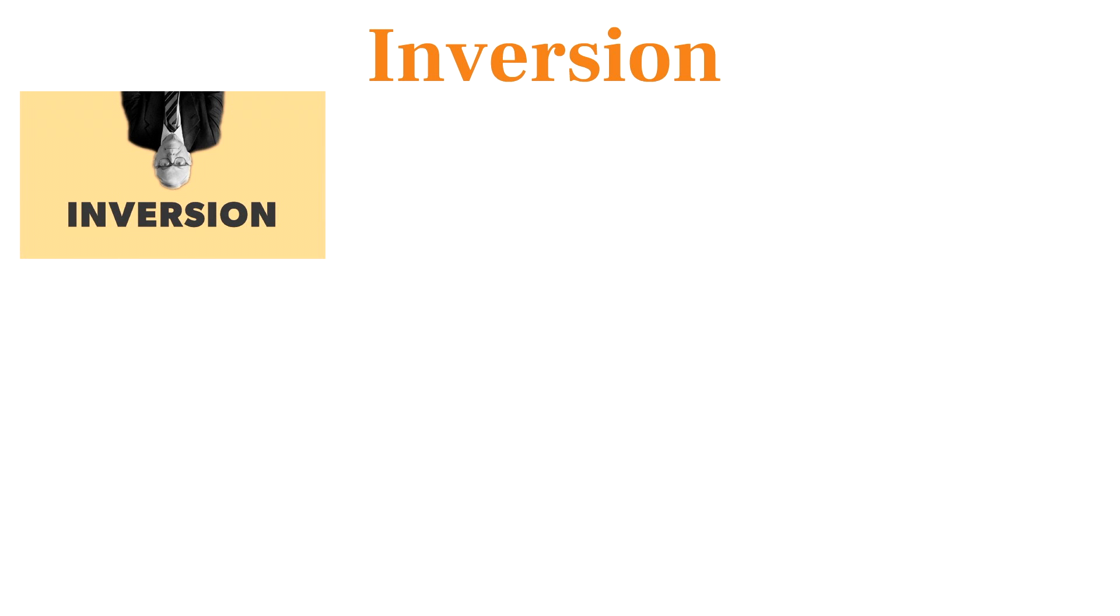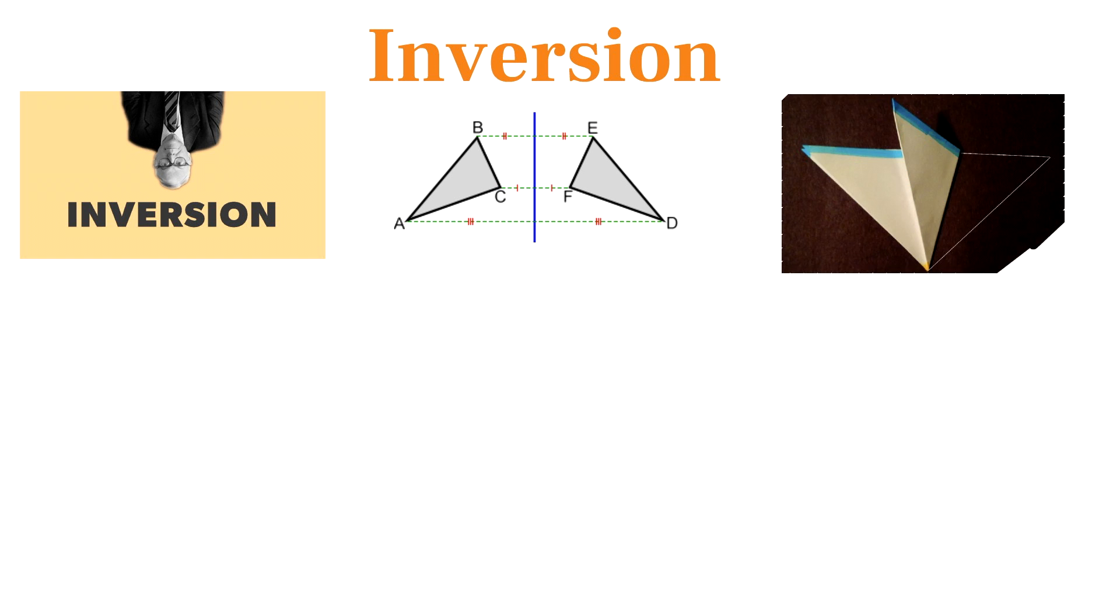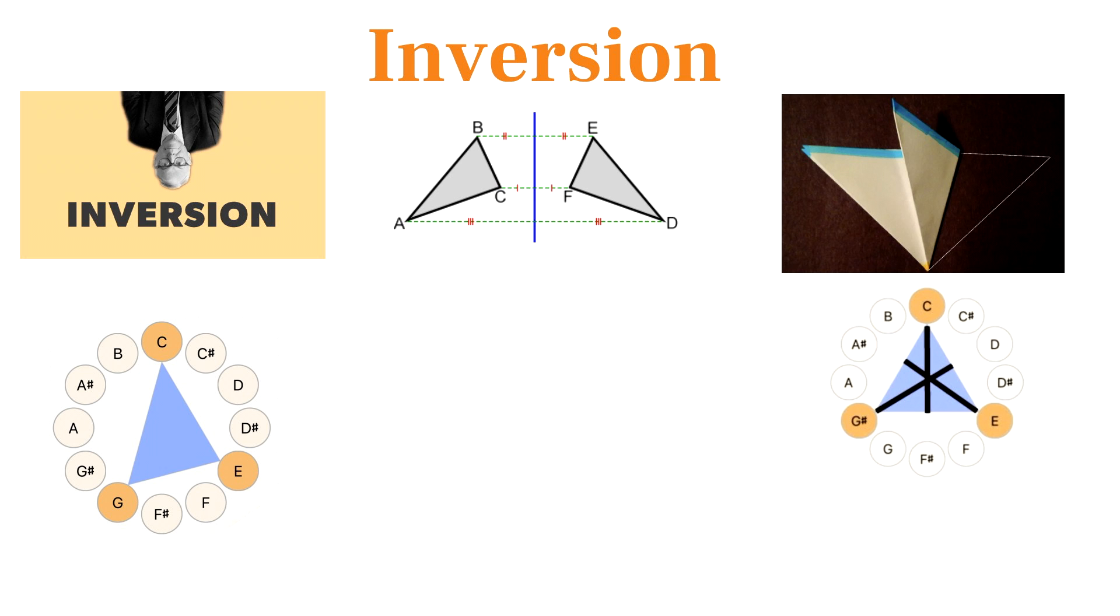To really understand set theory, you have to become familiar with the process of inverting sets, which means to flip them across an axis. We discussed how some sets are symmetrical and map onto themselves when flipped, but for non-symmetrical shapes like the major triad shape, inverting the shape gives us a mirror image of the original shape that we call the inversion pair.